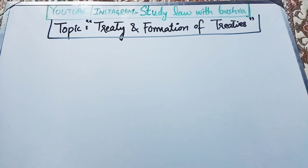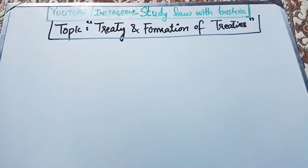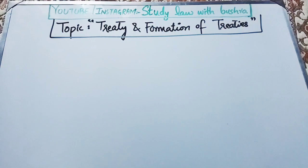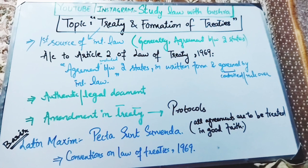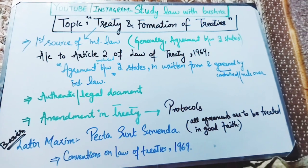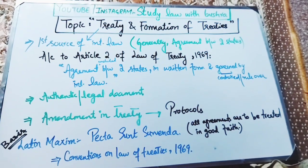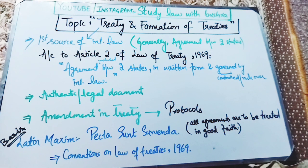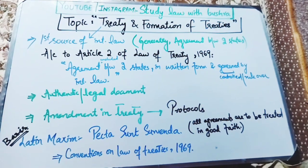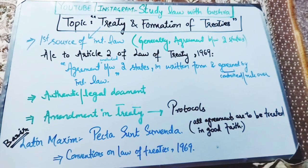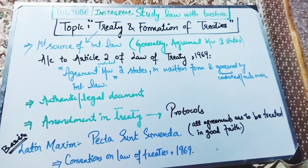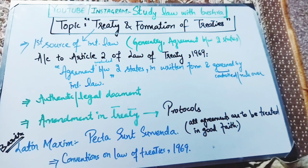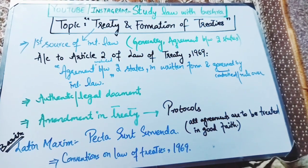Let's move towards the discussion: treaty and formation of treaties. First we will look into the meaning of treaty. Treaty is basically the first source of international law, and generally it is an agreement between two states. If we look at Article 2 of the Vienna Convention on the Law of Treaties 1969, treaty is defined as an agreement which is concluded between two states in written form and is governed by international law.